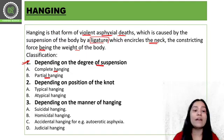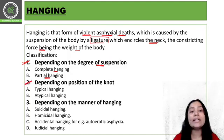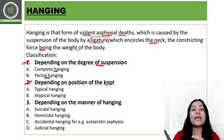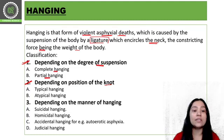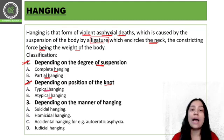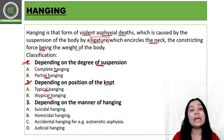The second category depends upon the position of the knot. There is a ligature around the neck with a knot tied, and on the basis of that knot position we classify hanging into typical hanging and atypical hanging. We will cover each type in upcoming classes.